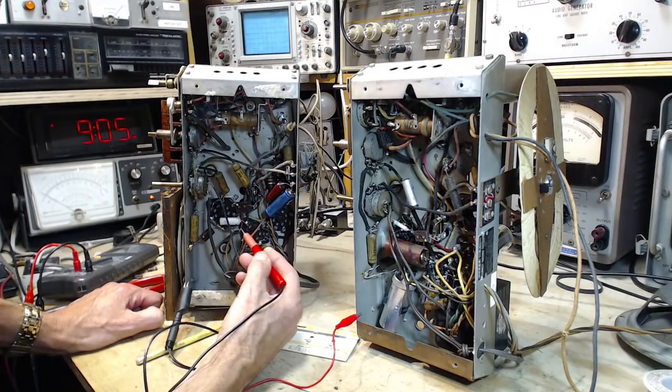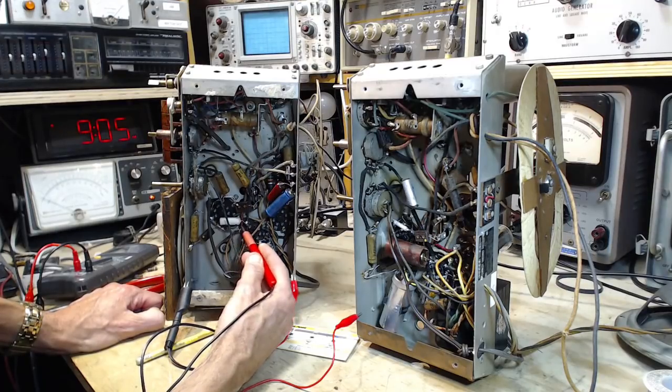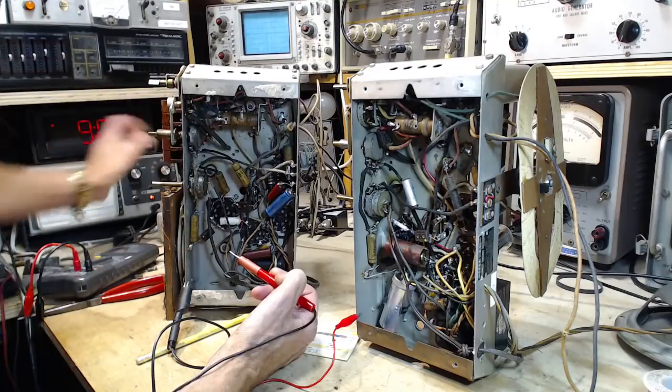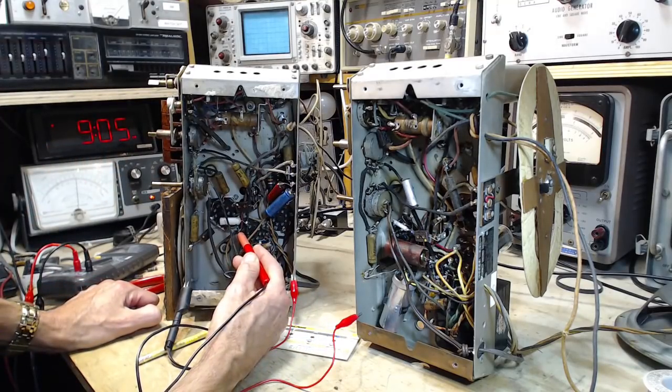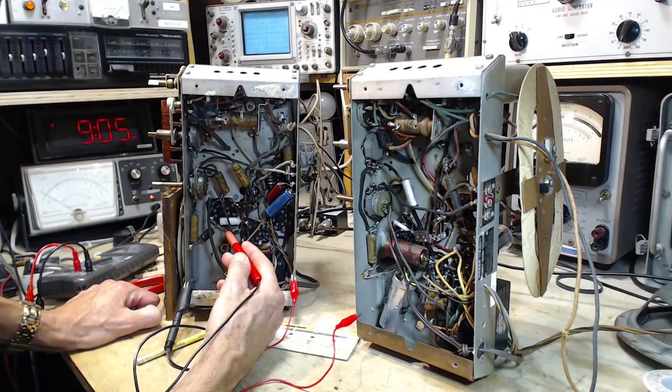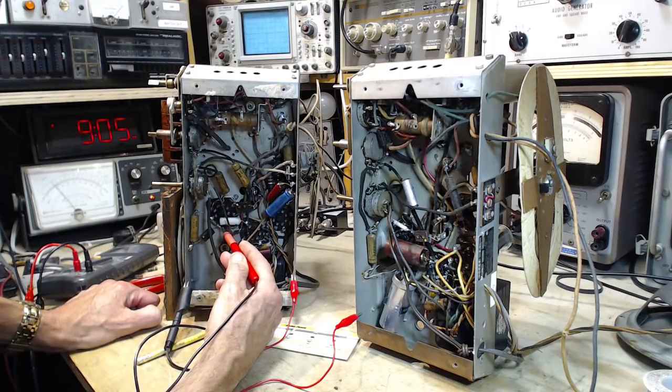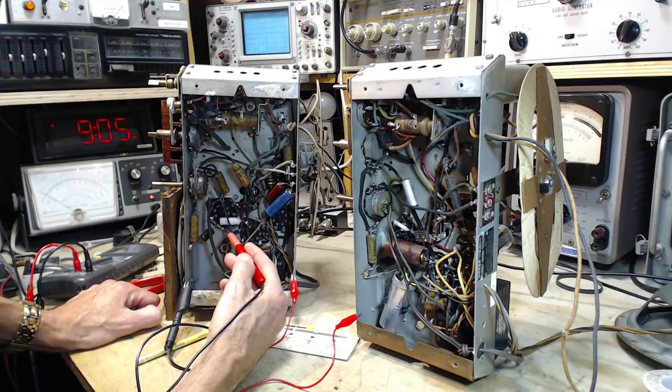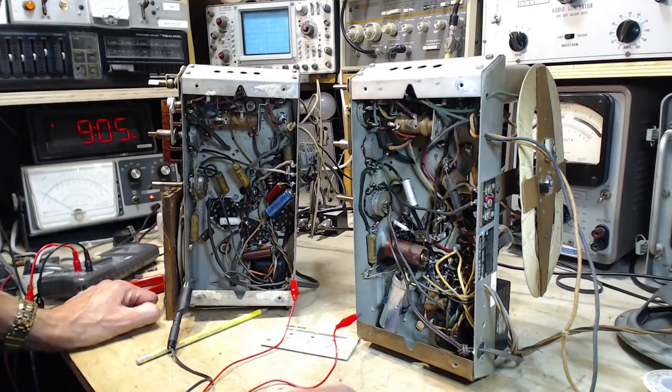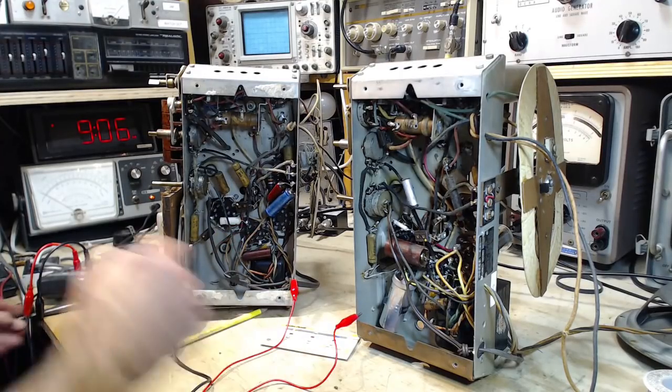So the voltage drop across the plate resistor. Ah! That was a bit of a mistake there. Let's try that again. So we got 280 on one side. 100. That's easy math. 180 volts dropping across a 270K resistor.